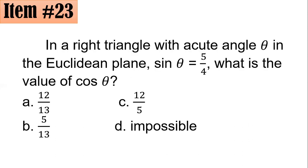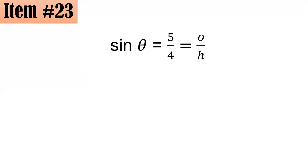Item 23: In a right triangle with acute angle theta, sine theta equals 5/4. What is the value of cosine theta? Remember that sine is the ratio of the lengths of the opposite side to the hypotenuse, and the hypotenuse is the longest side of the triangle.